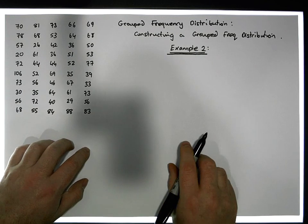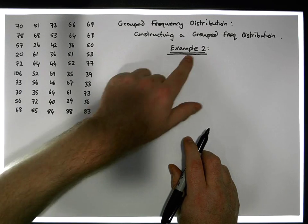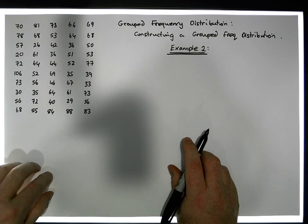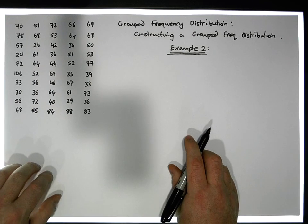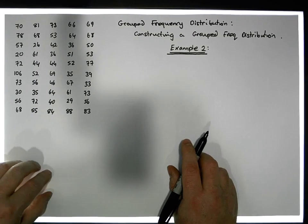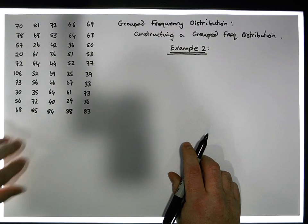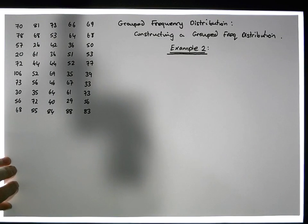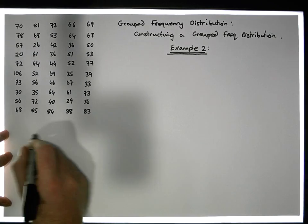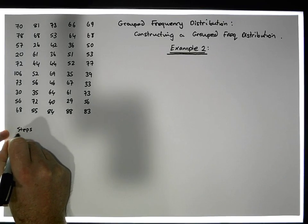I should point out that there's probably one small error in the previous video, in example one. But in this example, hopefully there will be no errors. So how do we go about constructing a group frequency distribution? There are a number of steps that we require — I'm just going to put down the steps here.